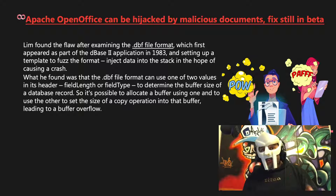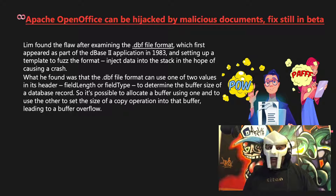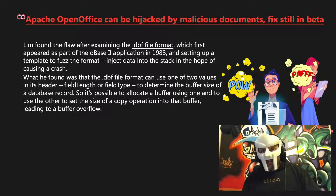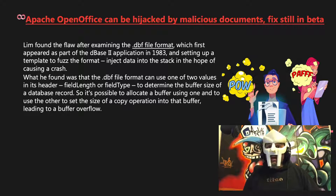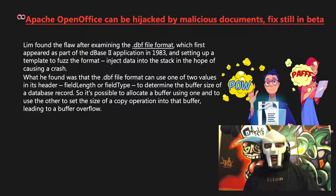What he found was that the .dbf file format can use one of two values in its header — field length or field type — to determine the buffer size of a database record. So it's possible to allocate a buffer using one, and to use the other to set the size of a copy operation into that buffer, leading to a buffer overflow.